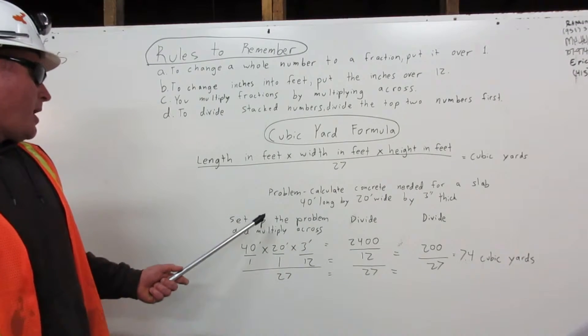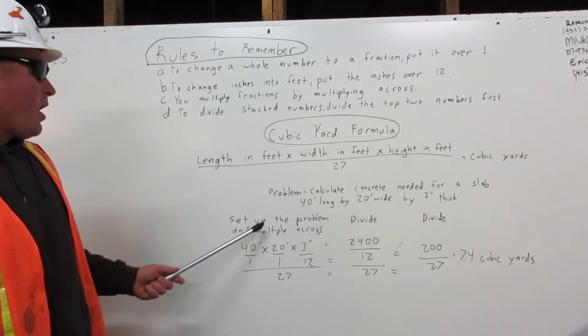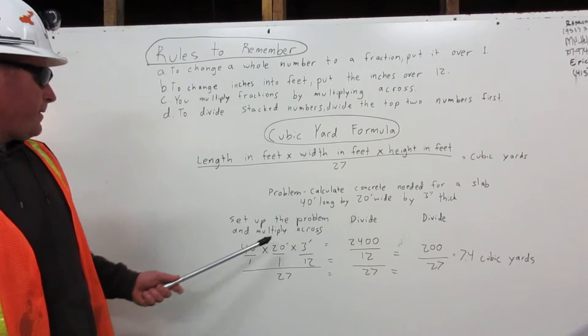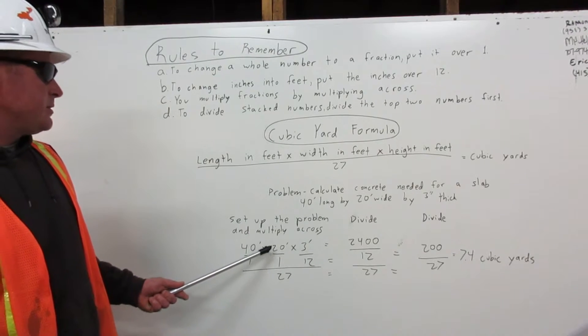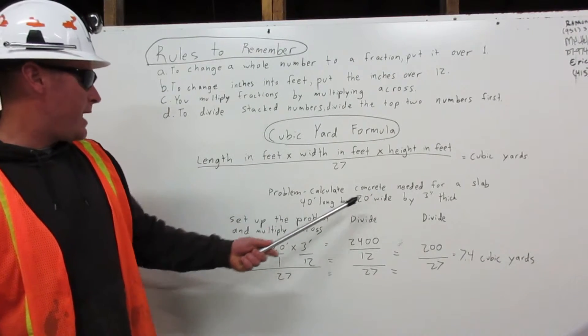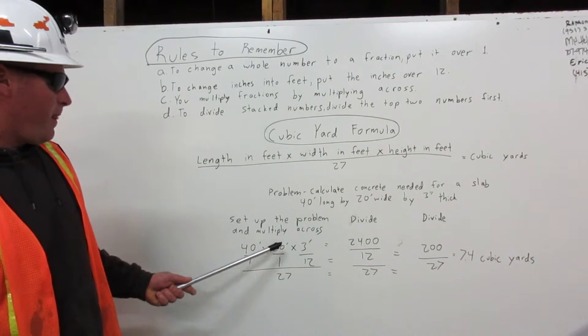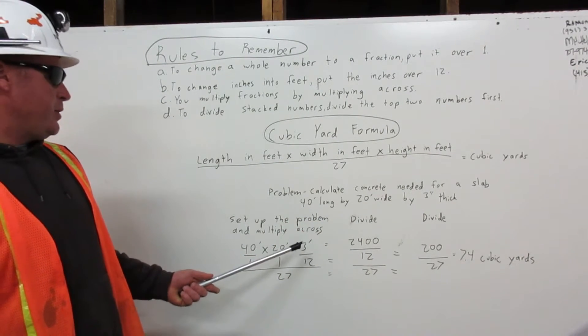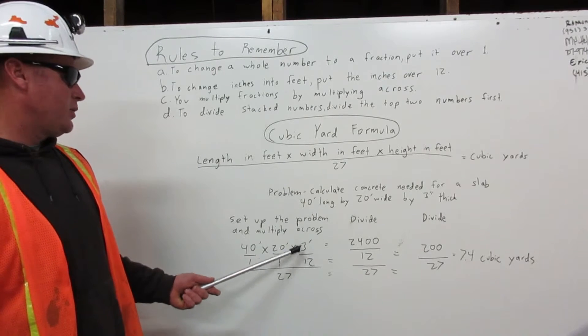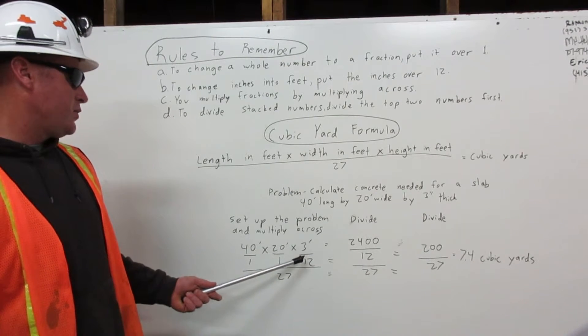Set up the problem and multiply across. Our slab is 40 foot long, 40 over 1 times. Our slab is 20 foot wide, 20 feet over 1 times 3 inches thick. You put your inches over 12 so it's 3 over 12.